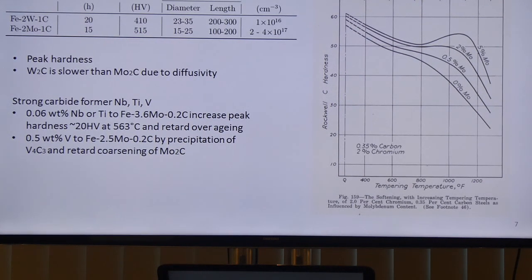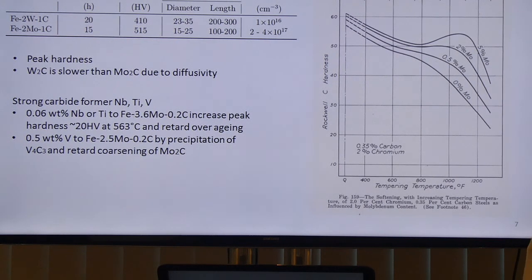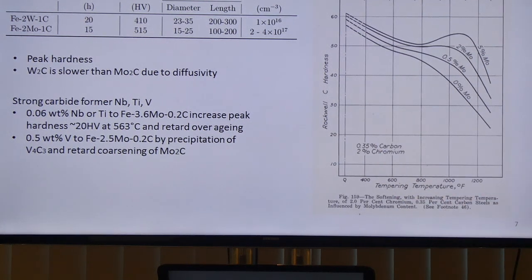This diagram shows secondary hardening for a series of steels with different concentrations of molybdenum additions, with a clear peak hardness visible. For heat-resistant chromium-molybdenum alloys, secondary hardening is very important. Tungsten and molybdenum both have a secondary hardening effect, but tungsten takes about 20 hours to reach peak hardness while molybdenum takes only 15 hours, due to tungsten's smaller diffusivity. Strong carbide formers such as niobium and vanadium are even more effective, increasing peak hardness and also retarding coarsening.